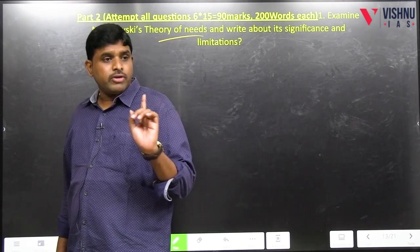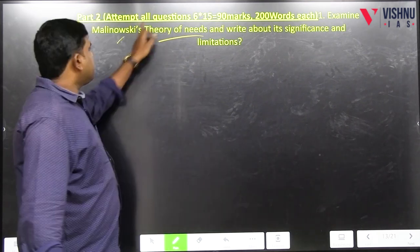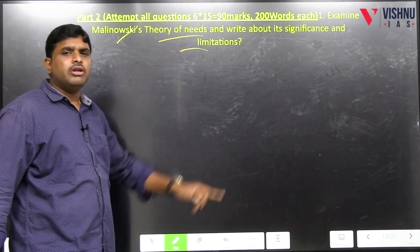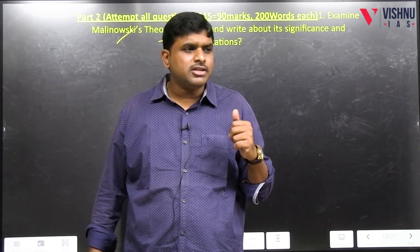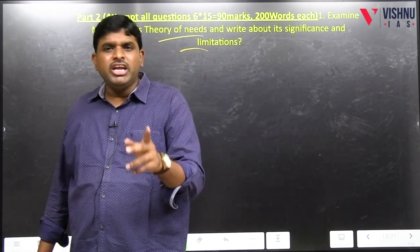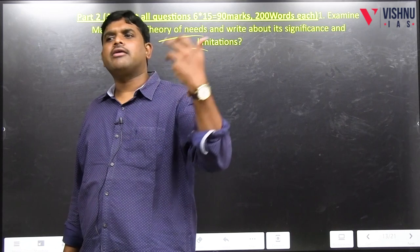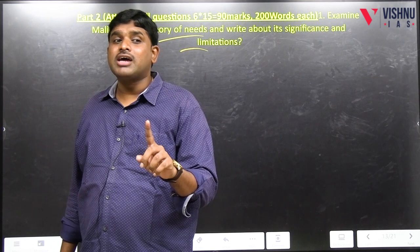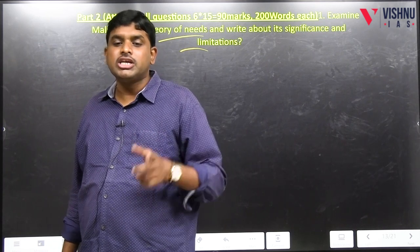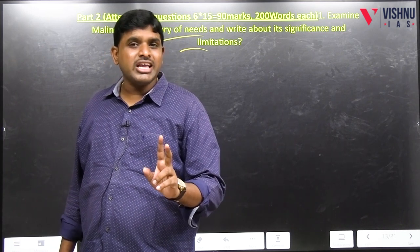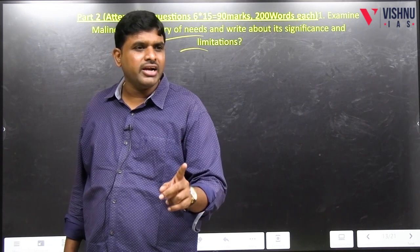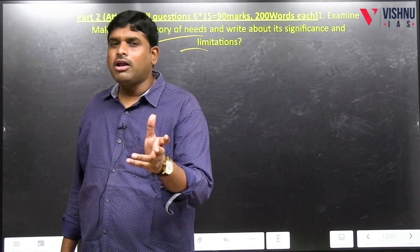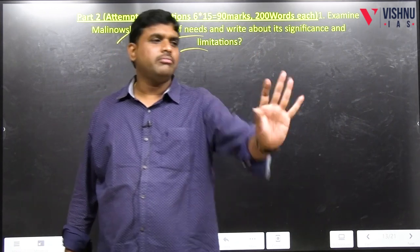Malinowski's theory of needs — write significance and limitations. Limitations = criticism. What is the criticism of theory of needs? Some relations without needs also exist — for example, if a father is not paying fees to the son, the relationship will not come to an end; still that social relation will move on. So everything cannot be seen from the context of need. It is utility-based — not all are need-based.